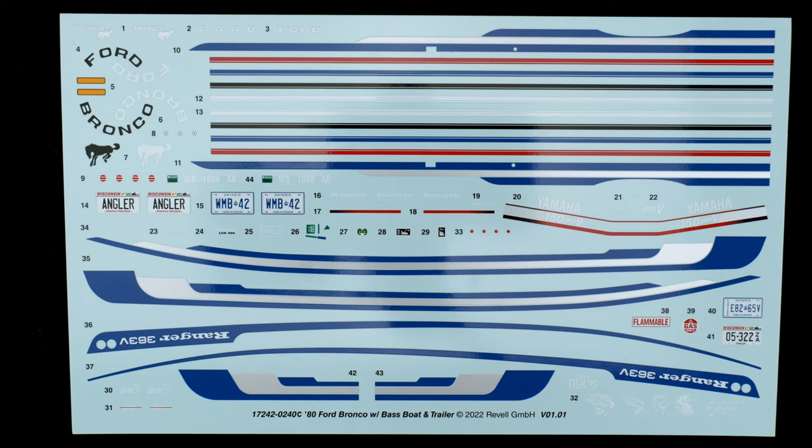Top side you have striping for the Bronco. Bottom side you have striping for decals for the boat. A couple of license plate choices. Both Wisconsin and Ontario. They have both Bronco and trailer license plate decals. So that's nice that they included that.